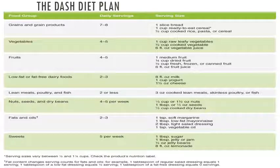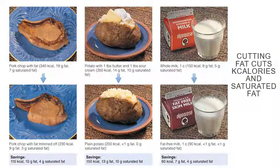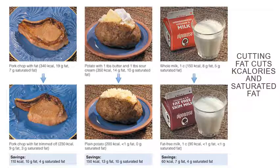The DASH diet plan: you can look at the food groups and daily servings to see how much you should be having each day from each food group, to improve your physical health. Cutting fat cuts kilocalories and saturated fat.